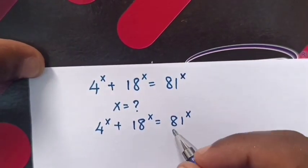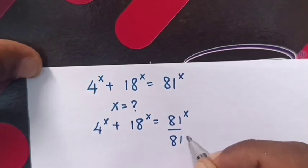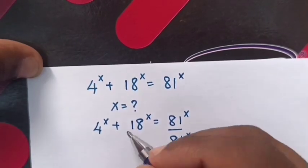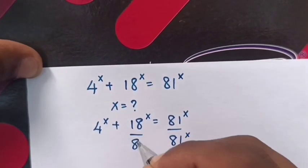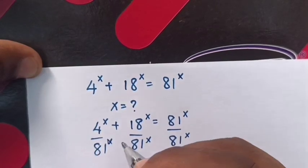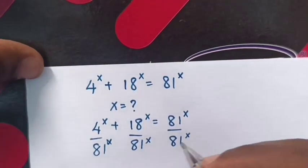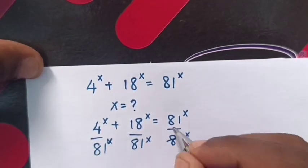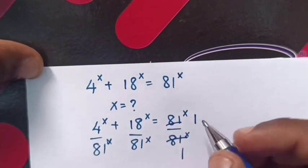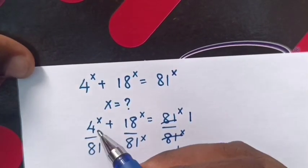We divide by 81 power x on both sides. Therefore, this 81 power x will cancel, and it will be 1.